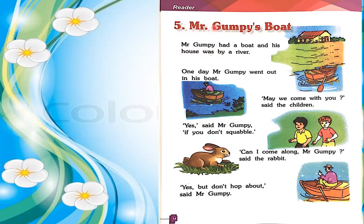Lesson number 5, Mr. Gumpy's Boat. Mr. Gumpy had a boat and his house was by a river. One day, Mr. Gumpy went out in his boat. May we come with you, said the children. Yes, said Mr. Gumpy, if you don't squabble. Can I come along, Mr. Gumpy, said the rabbit. Yes, but don't hop about, said Mr. Gumpy.